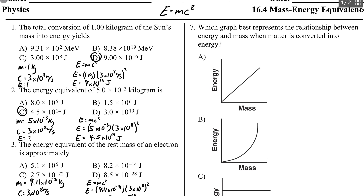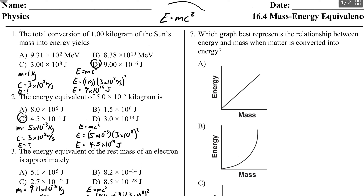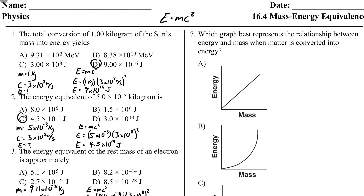Number seven: which graph best represents the relationship between energy and mass when matter is converted into energy? Looking at E equals MC squared, what is the relationship between energy and mass? C squared is a constant, so it's a direct relationship — if the mass doubles, the energy doubles. That's choice A.